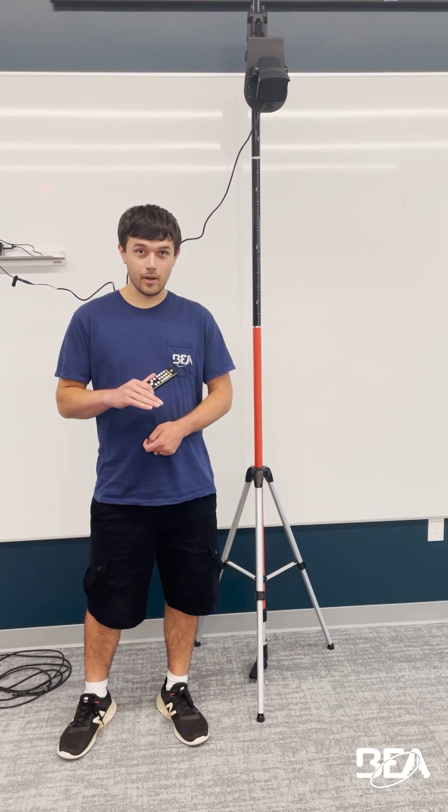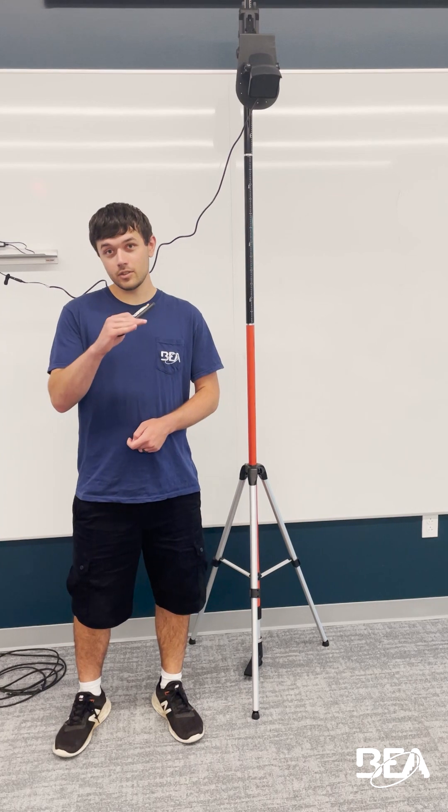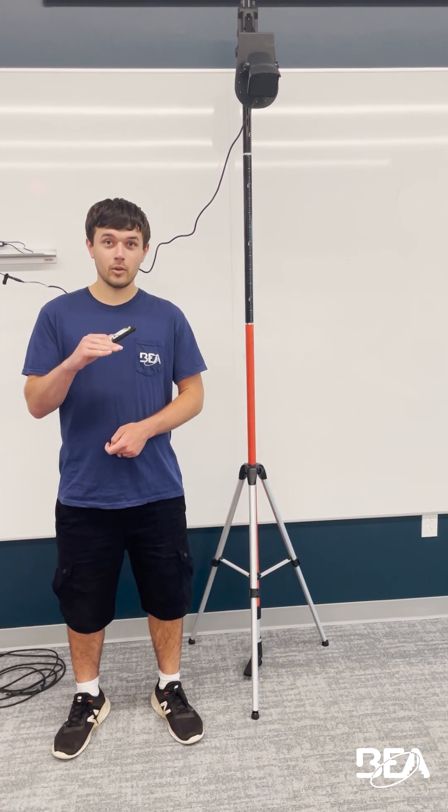If you're on the lower portion of the mounting height, you're going to set your detection filter higher. If you're on the higher version of the mounting height, you're going to set your detection filter lower.